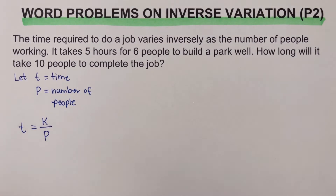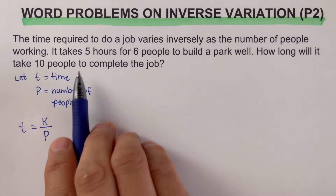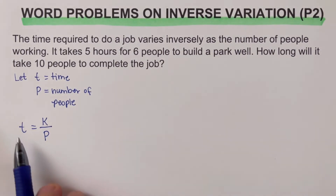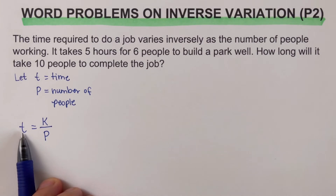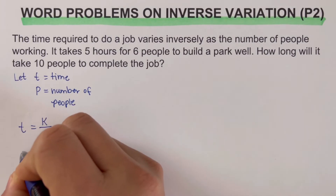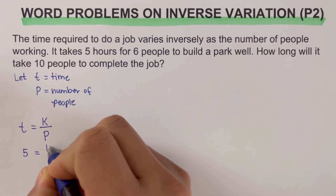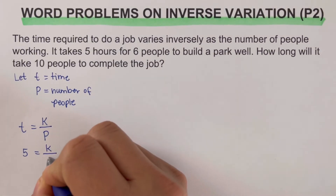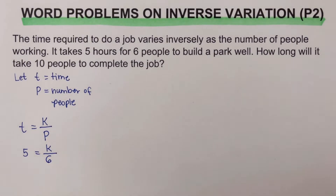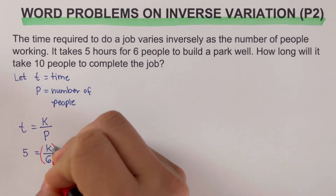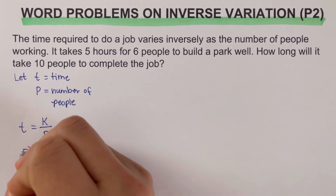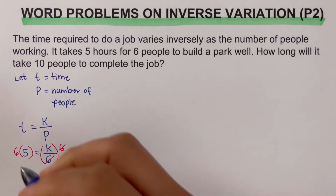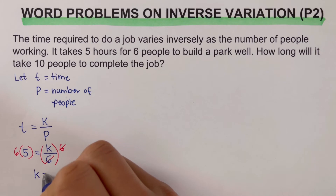We go ahead and plug the values in. It takes five hours for six people, so t equals 5 and p equals 6. We multiply both sides by 6 to solve for k, and we get k equals 30. So 30 is our proportionality constant.